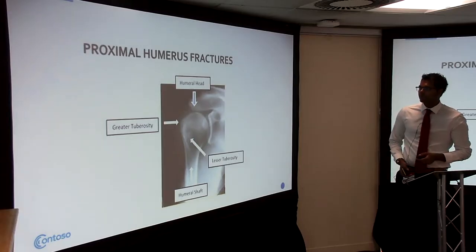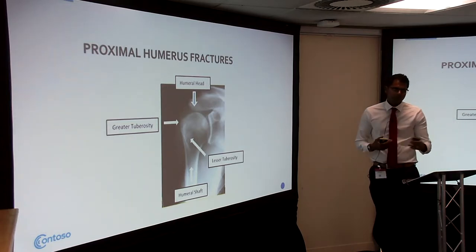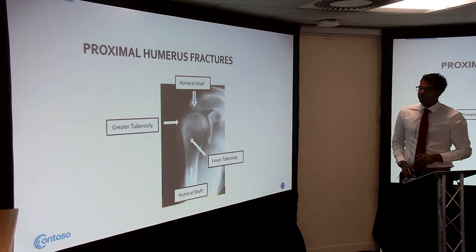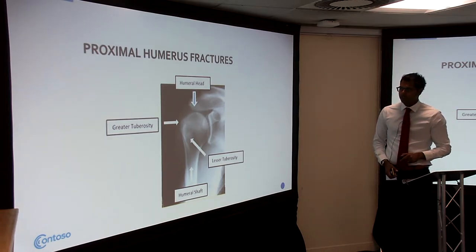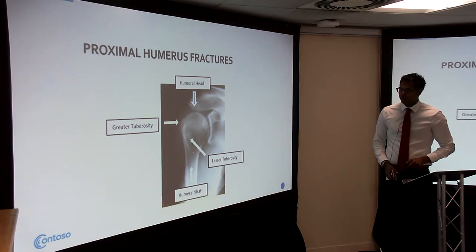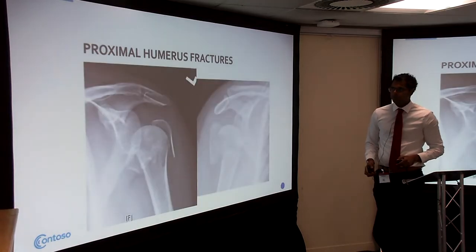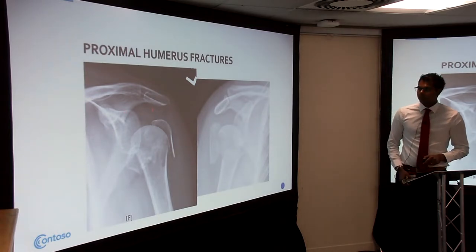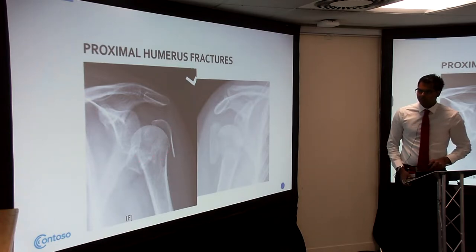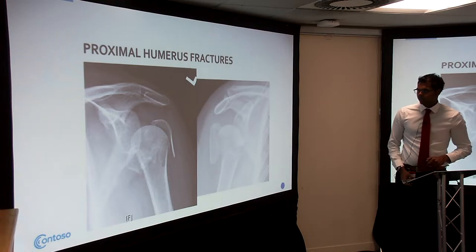On an x-ray you'd be looking for the humeral head, the greater tuberosity where supraspinatus attaches, the lesser tuberosity, and the humeral shaft. The glenoid is the socket, with the acromion and clavicle above. A four-part fracture shows greater tuberosity fragment, lesser tuberosity fragment, and a fracture line separating the head from the shaft — you can see those four distinct pieces.